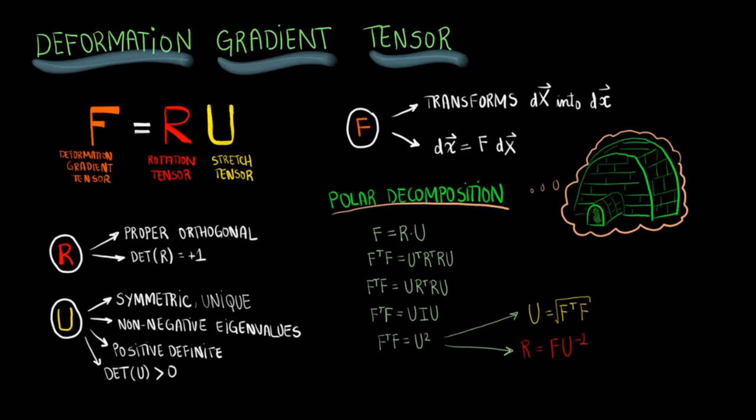You can double-check your answers in a couple of fashions. First, you can always multiply R times U and check if you get the F tensor you originally had. Second, you can multiply R transpose times R and check if you get the identity matrix to make sure that the rotation tensor R is an orthogonal tensor.